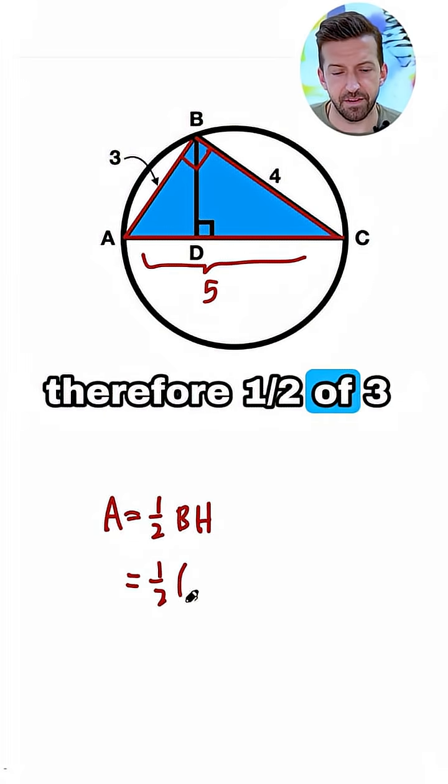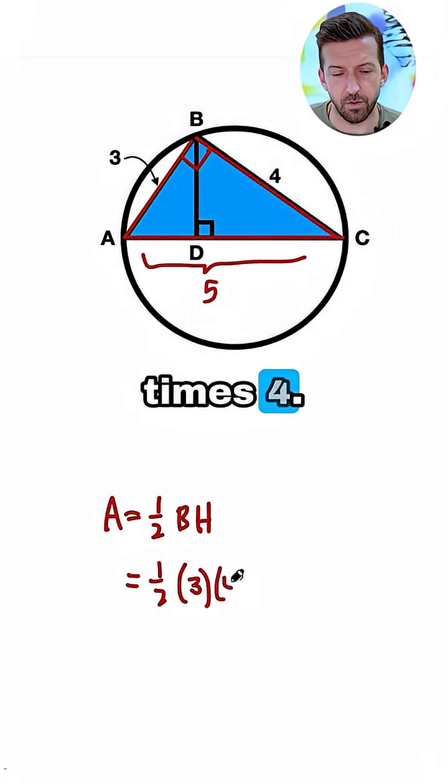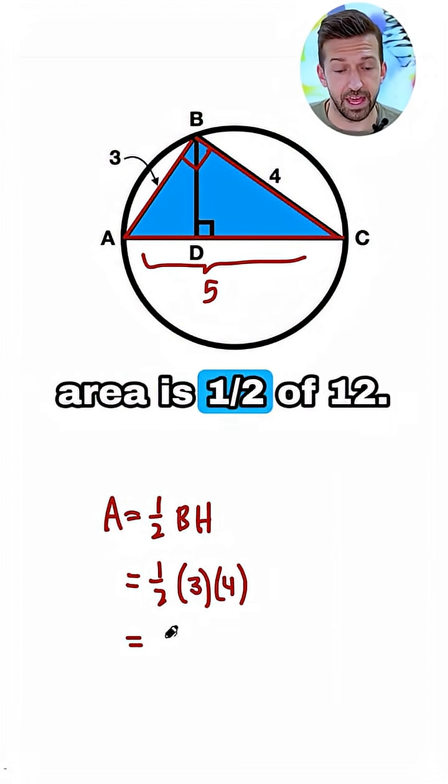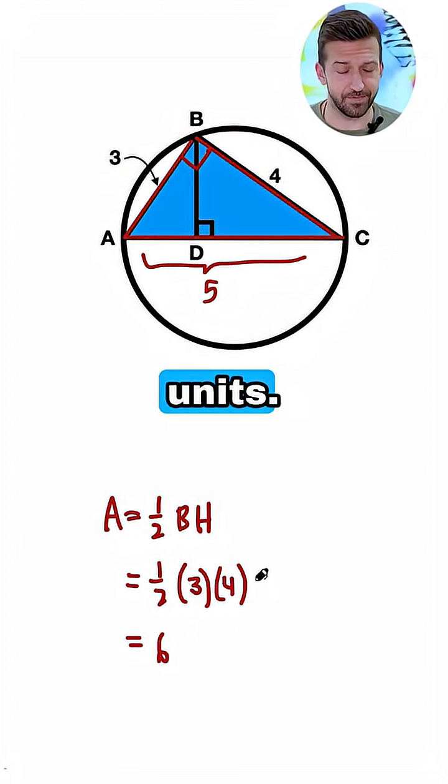So the area is therefore 1 half of 3 times 4. That means the area is 1 half of 12, which means the area is 6 square units.